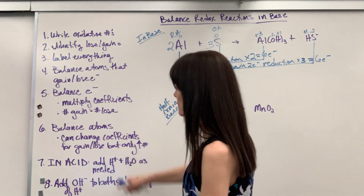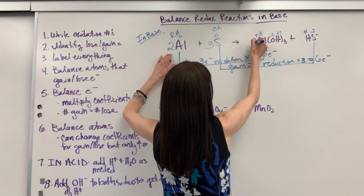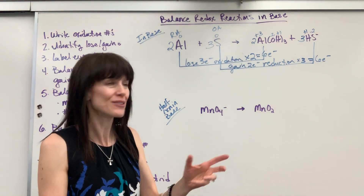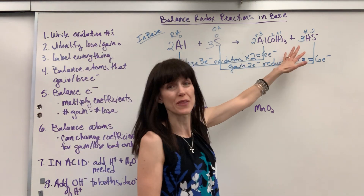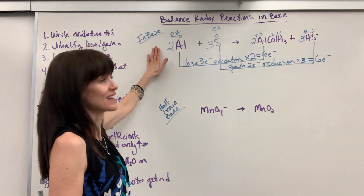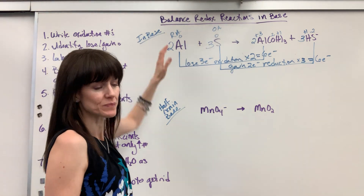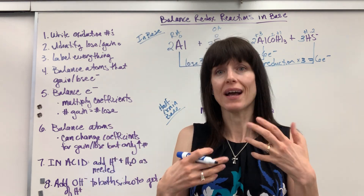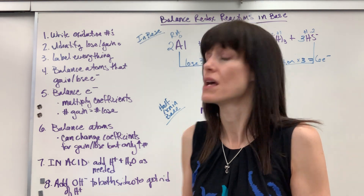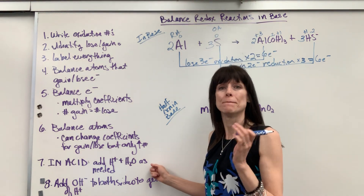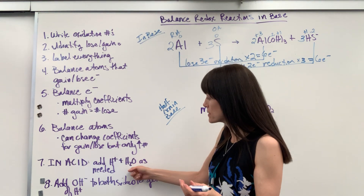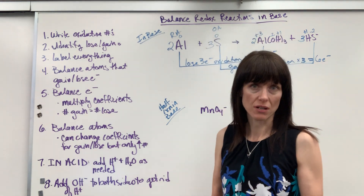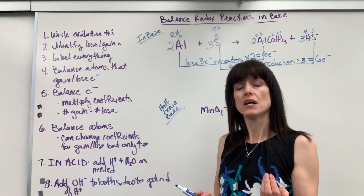Now let's balance our atoms — step six. I've got two aluminum and two aluminum, three sulfur and three sulfur. But wait — I have oxygen and hydrogen on the product side but no oxygen and hydrogen on the reactant side. That's why we're going to balance this in base. The easiest way I've found for students is to first balance it as if it is in acid. That means you can add hydrogen and water anywhere you need to balance the hydrogen and oxygen. So we're going to pretend for just a second that we're balancing an acid.